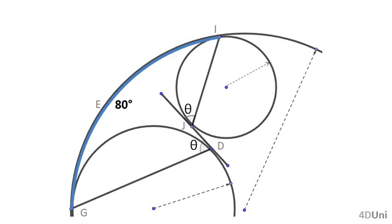Hello, let's solve this problem. What is the information given? We have 3 circumferences. The angular measure of arc GEI is 80 degrees, and the points G, D, J, and I are points of tangency.